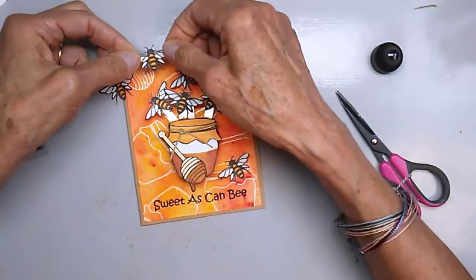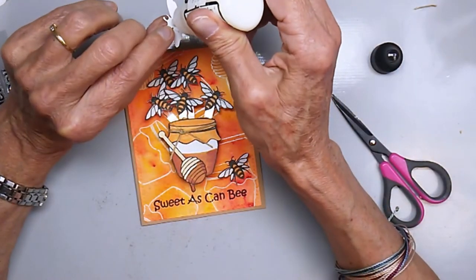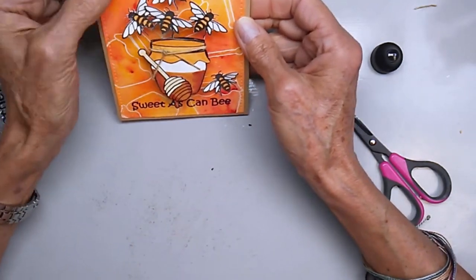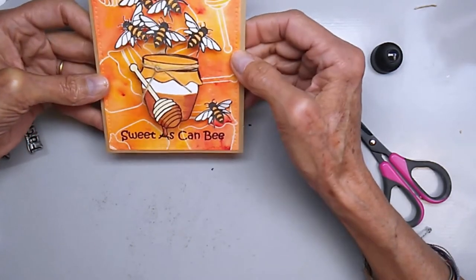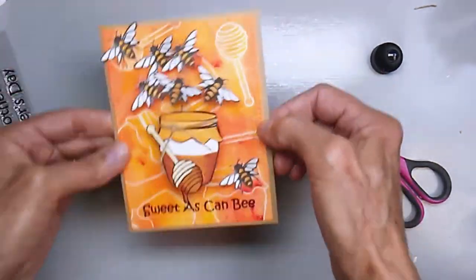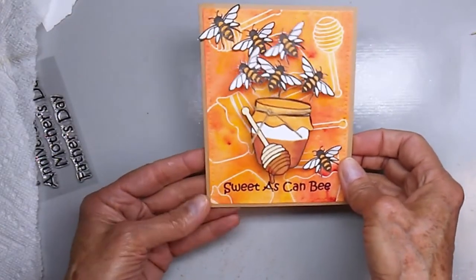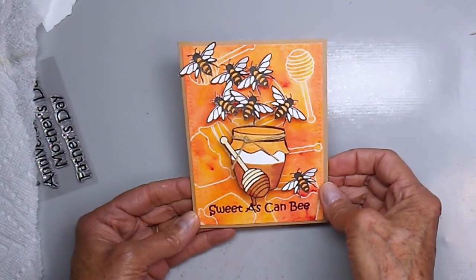There's my wobbler. As you can see the bees are kind of buzzing around and the honeybee pot kind of wobbles at the same time.